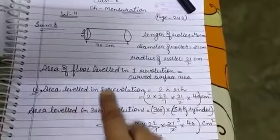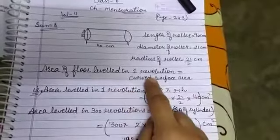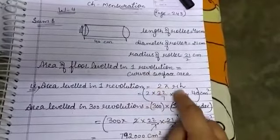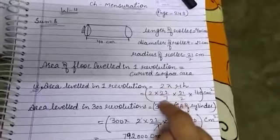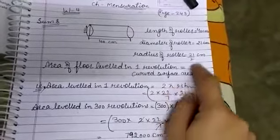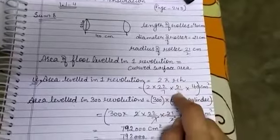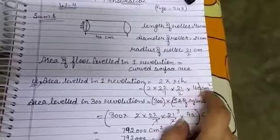That is area leveled in one revolution, it is equal to curved surface area, that is 2πrh. So we will substitute the values: 2π as 22 upon 7, radius we have already calculated as 21 upon 2, and height as 40.